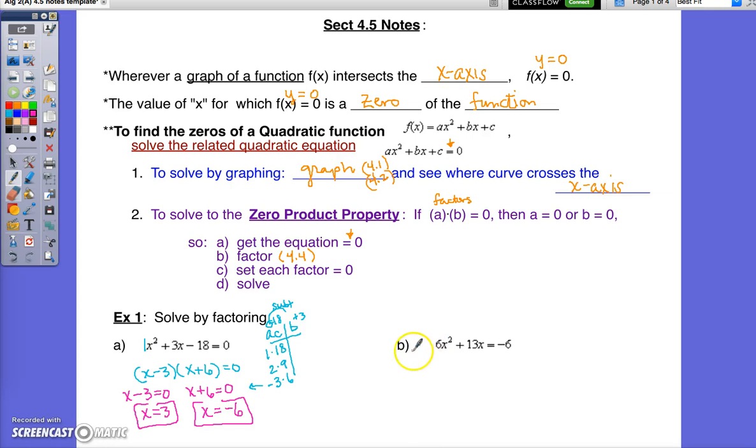On part B, I have to get the equation set equal to 0, first step. This equation is not set equal to 0, so I am going to have to add 6 to both sides. So it says 6x squared plus 13x plus 6 equals 0. And then once it's set equal to 0, I will make my ACB table.